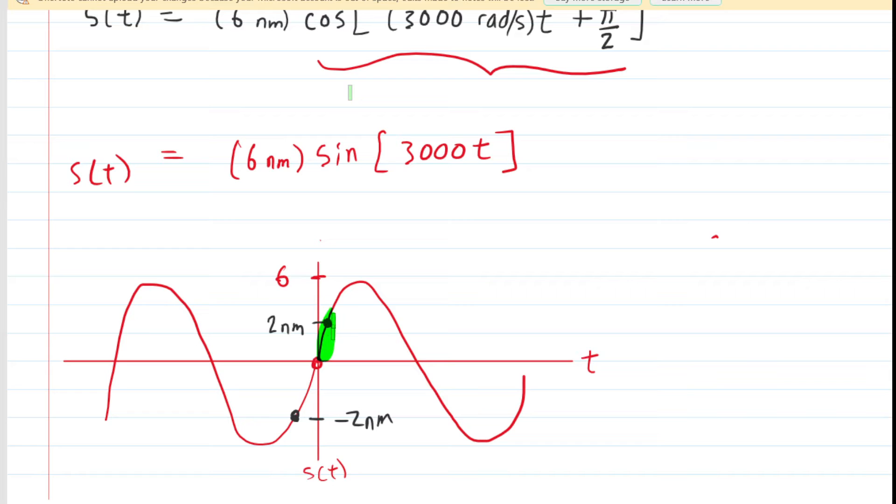And however much time it takes to get to positive 2 nanometers, that would be the same amount of time it would take to get from negative 2 nanometers back to the origin. So in other words, the green time interval is the same as the yellow time interval. So if we can find the green time interval, we could then just double that answer, and that's going to give us the total amount of time to travel between negative 2 nanometers and positive 2 nanometers.